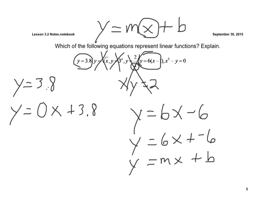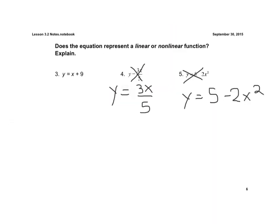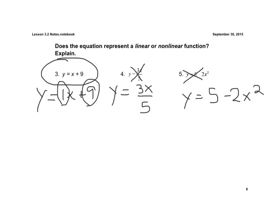And the last one here, the x is to the second power, so that's not a linear function. Now, if we look at this one — is this a linear function? Yes. I can rewrite it as y equals 1 times x plus 9, so I can identify my m to be 1 and my b to be 9.